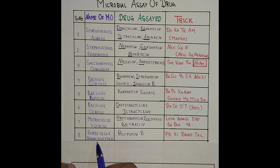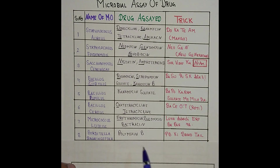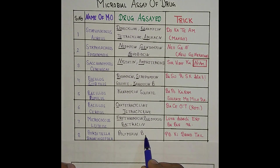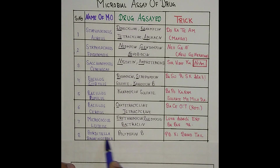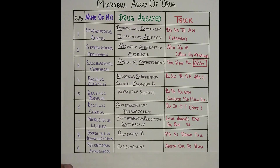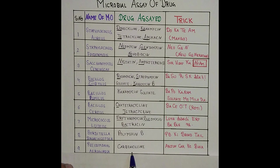The next one is Bordetella bronchiseptica, and the drug is Polymyxin B. The trick is 'PB ki broad tail': Bordetella — PB for Polymyxin B, 'broad tail' as the mnemonic for bronchiseptica.